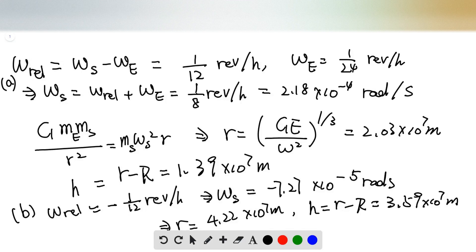If the satellite is moving from west to east, which means it's moving in the same direction of the Earth's self-rotating, then the relative angular speed is equal to the angular speed of the satellite minus the angular speed of the Earth.